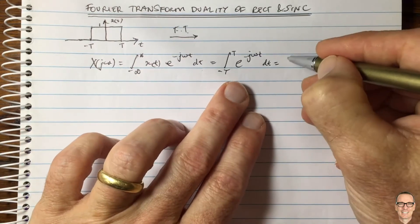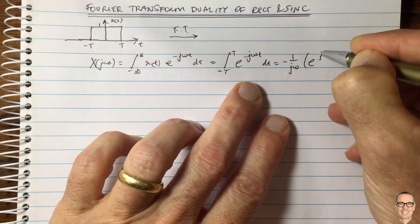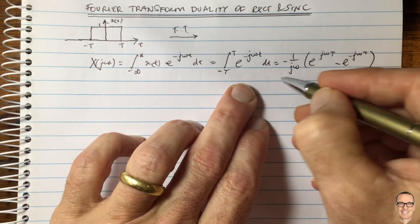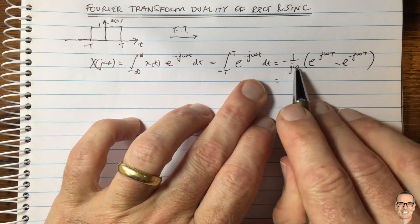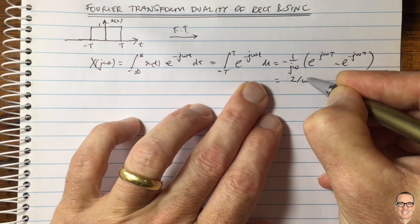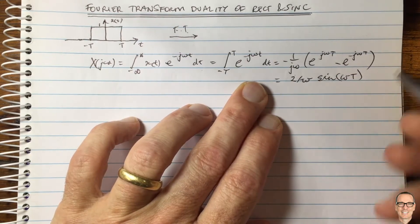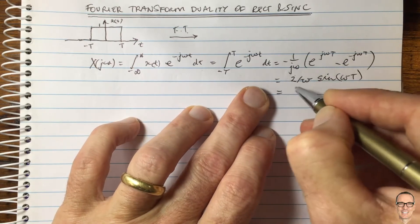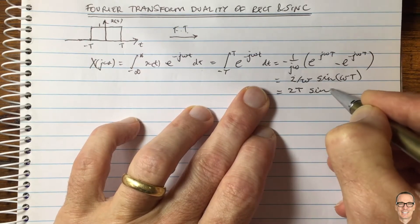This evaluates to minus one over j omega, times the quantity e to the j omega T minus e to the minus j omega T. By multiplying top and bottom by two, we can recognize this as the equation for sine, giving us two divided by omega times sine of omega T. Then multiplying top and bottom by capital T gives two times capital T, leaving us with the equation for the sinc function.